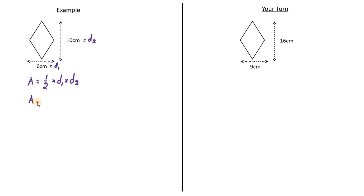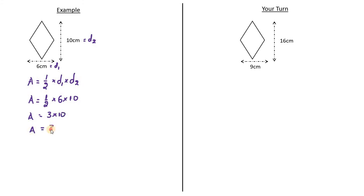So just substitute these values into the formula: half times 6 times 10. A half of 6 is 3, so area equals 30. Both measurements are in centimeters, so the area will be in centimeters squared.